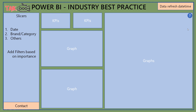If a visual is complicated, you can add a help icon on the top right, as shown on screen, so that it will be helpful for end users. Whenever they get confused, they click on it and they will get an idea about what the visual actually says and what is inside that visual, graph, or table.